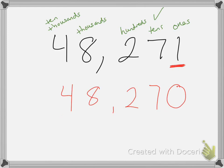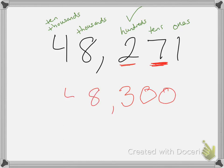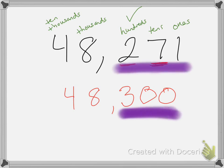Now let's round this number to the nearest hundreds place. I'm going to put a check over the hundreds place and look at the number to the right to see if it is five or more. The number to the right is a seven, and seven is more than five. So we make the hundreds digit one more than what it is — two plus one is three. Then we write zeros in the tens place and in the ones place, and all of the other numbers stay the same. Rounding to the nearest hundreds would be 48,300. We know that because 271 is closer to 300 than it is to 200.